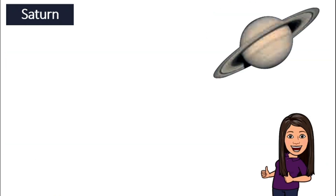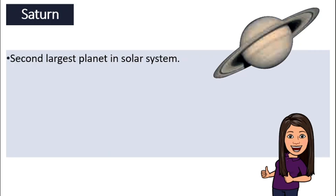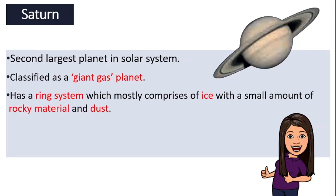Next, we will move on to Saturn. Most of you know Saturn because of its very special feature — the ring around it. It looks like a planet wearing a huge ring like a hula hoop. Saturn is the second largest planet in the solar system after Jupiter. It is classified as a giant gas planet and it has a ring system, and we might not know that this ring system mostly comprises of ice — it is made of ice and maybe a little bit of rocks and dust.